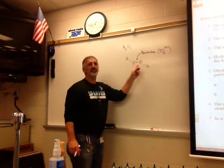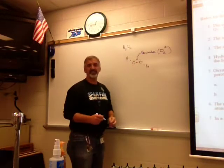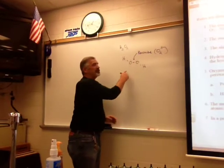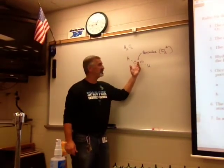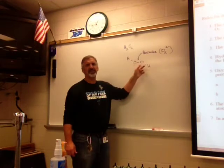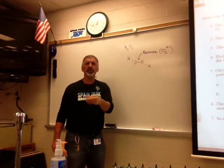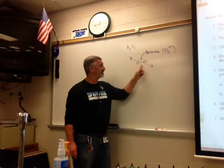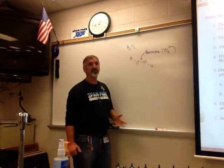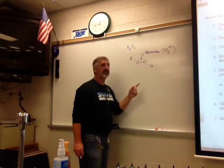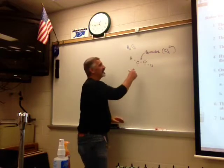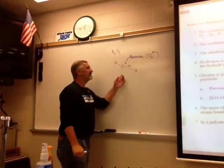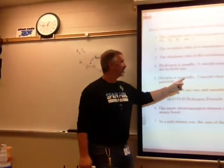The peroxide bond is rare and reactive. Hydrogen peroxide always comes in an amber bottle because sunlight gives enough energy to break this bond. It wants to decompose back into water and oxygen gas. The bottle says to store in a cool, dark place. You should really put it in the refrigerator. That single-bond oxygen is very unstable — that's a peroxide. But again, that's rare, so almost always oxygen is minus two.